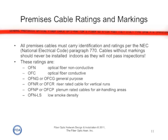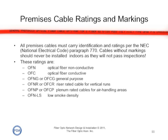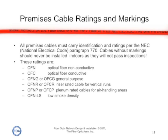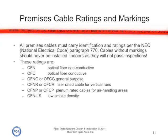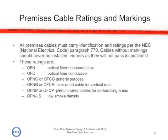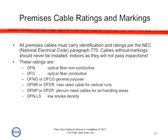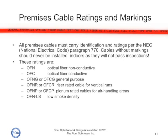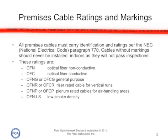All premises cables must carry identification and ratings — in the United States per the National Electric Code, or in Canada the CEC. Cables without markings should never be installed indoors, as they will not pass inspection and may be flammable. You have to choose a cable that's rated for general purpose, riser — which is a higher rating for flame retardancy — or plenum, which is used in air handling areas overhead. In Europe, cables are often labeled for low smoke density, meaning these cables, when they get hot, don't burn and don't emit toxic vapors.